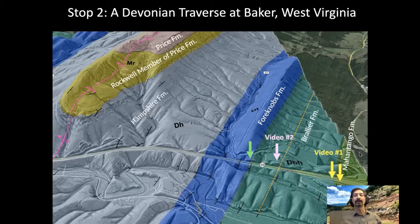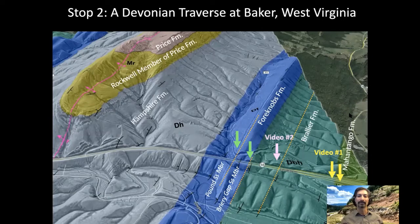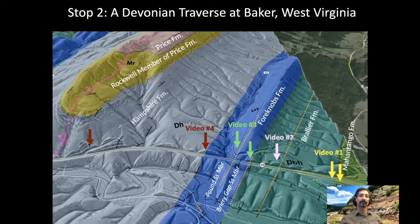After that, we'll move up the section to see the contact with the overlying Four Knobs Formation, where you'll see the Briary Gap Sandstone Member, defined by John Dennison in his initial definition of the Four Knobs. Then we'll move up to a second prominent sandstone called the Pound Sandstone Member — both members are mappable across several states and form great marker beds — all described in video number three. Video number four covers the transition out of the upper Four Knobs and into the Hampshire Formation.